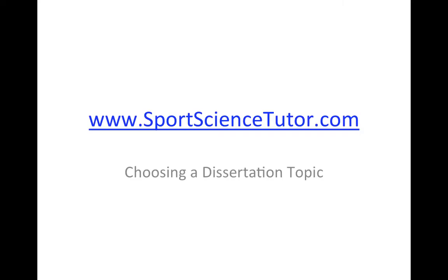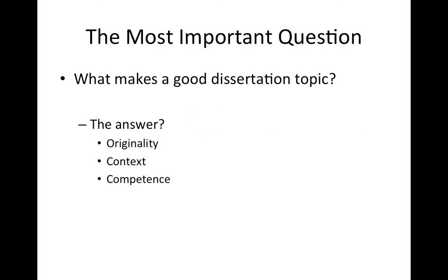Welcome back to SportsScienceTutor.com. In this tutorial we're looking at how to choose a dissertation topic. The most important question that needs to be asked is: what makes a good dissertation topic? This can be summarised with three words — originality, context and competence.